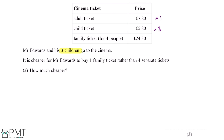So the price for the four tickets will be £7.80, which is the price for the adult ticket, and then three times by £5.80, which accounts for the three child tickets. And if we put this into our calculator, this gives us an answer of £25.20.